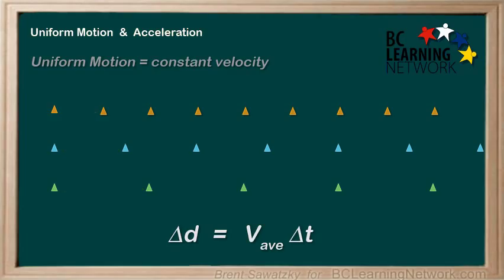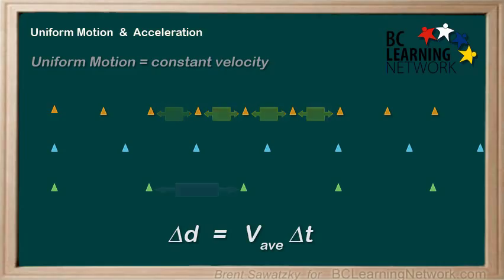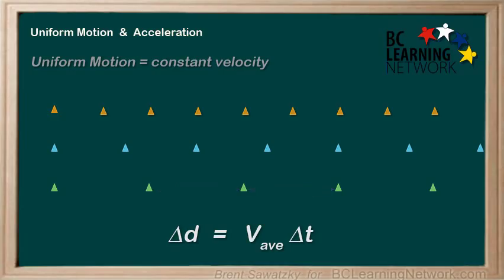The green truck's change in distance between the pylons is the greatest over each second. Another thing we can observe about the motion of these trucks is that the pylons are all evenly spaced — that is, the change in distance for each second is the same. Therefore, the velocity isn't changing for any of the trucks, and that means these trucks are exhibiting uniform motion.